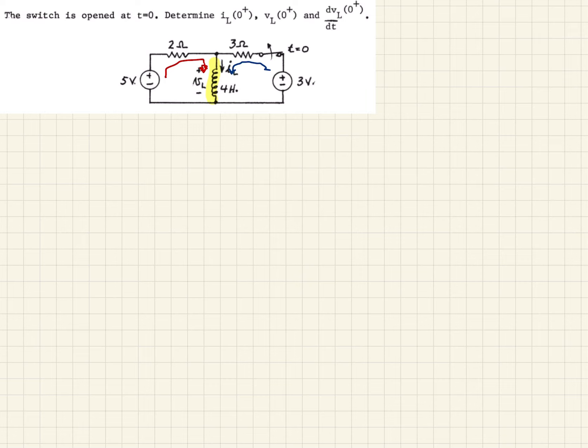So therefore, we can write an expression for IL. This is right before the switch opens. It'll be the current from the 5 volt source, which would be 5 over 2. That's Ohm's Law, voltage over resistance. And in addition, we have from the 3 volt source, 3 over 3. When we calculate that out, that's going to be 7 over 2 amps.